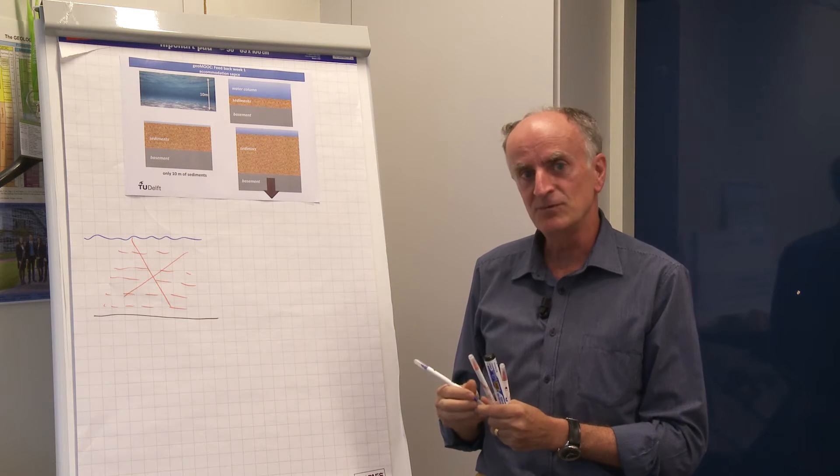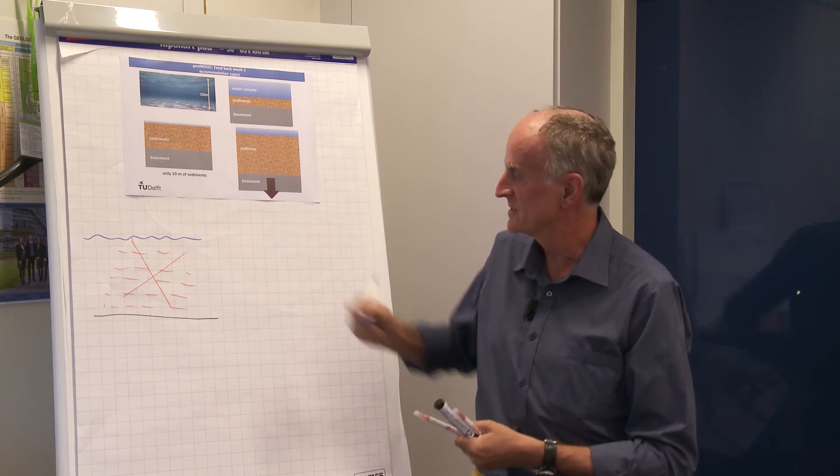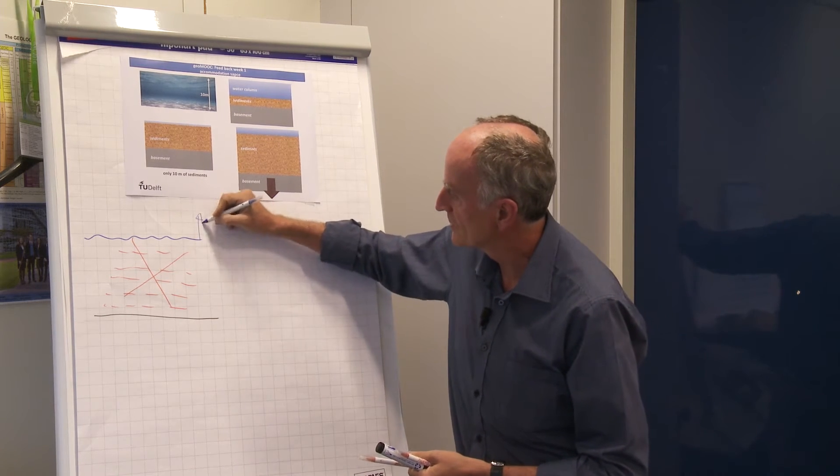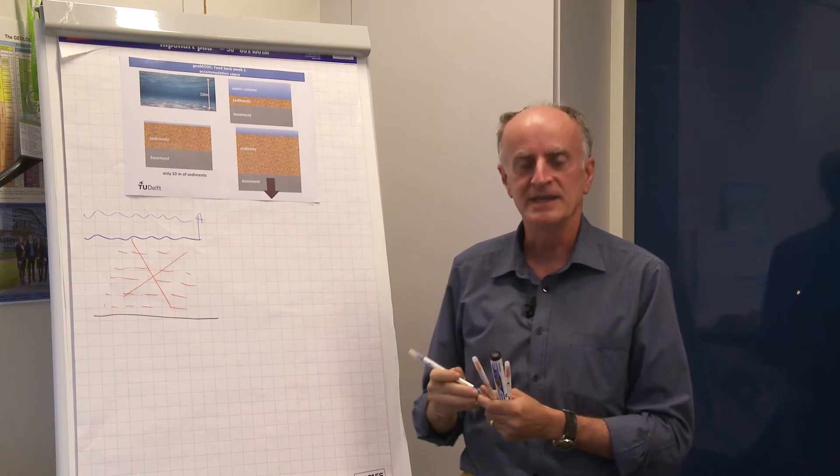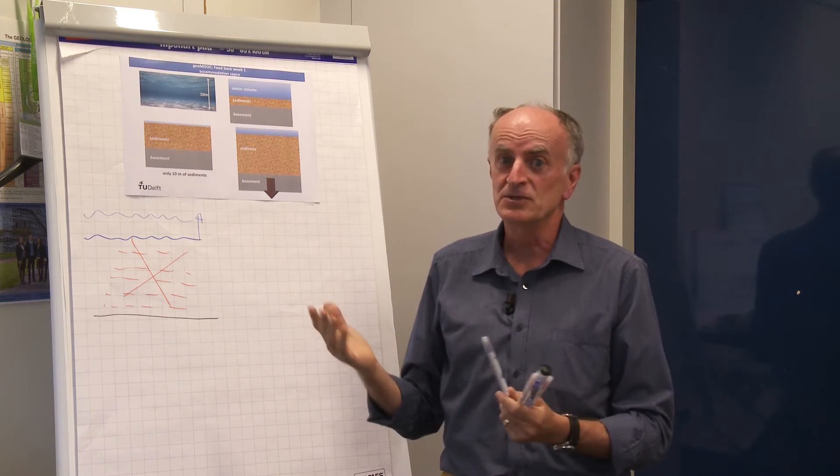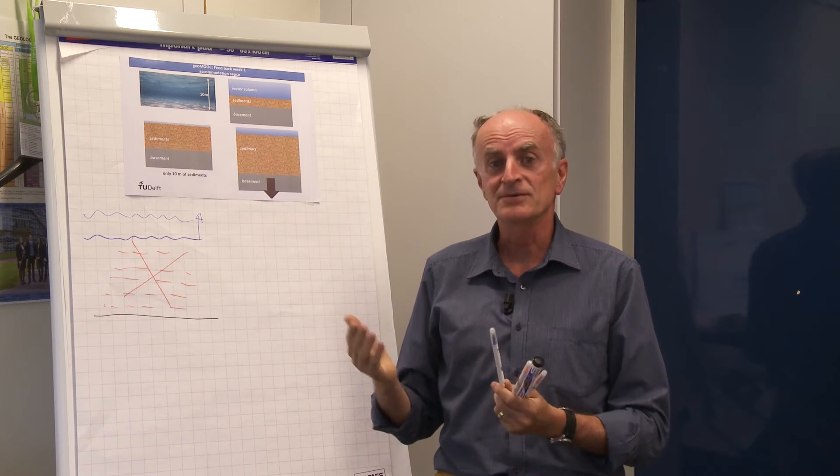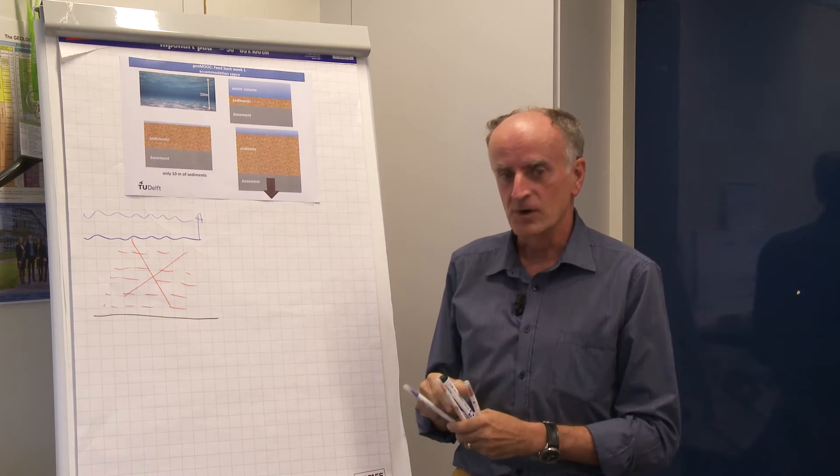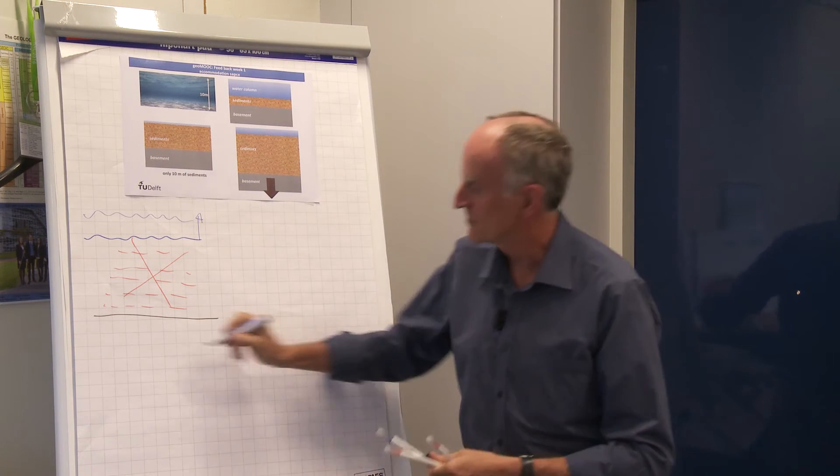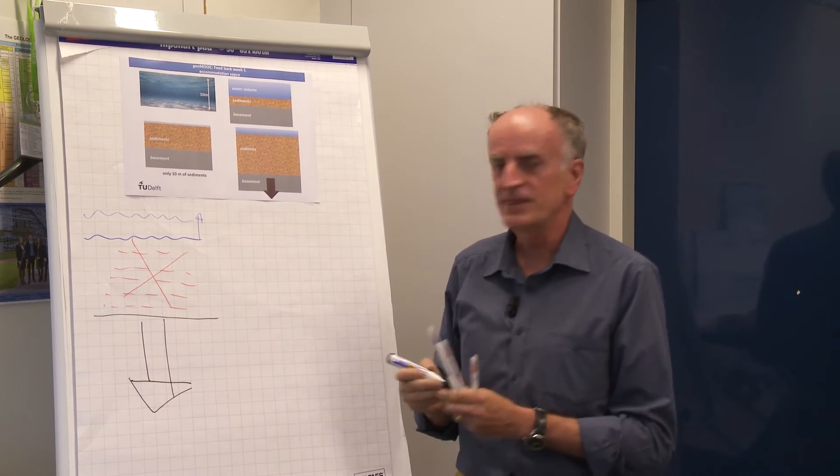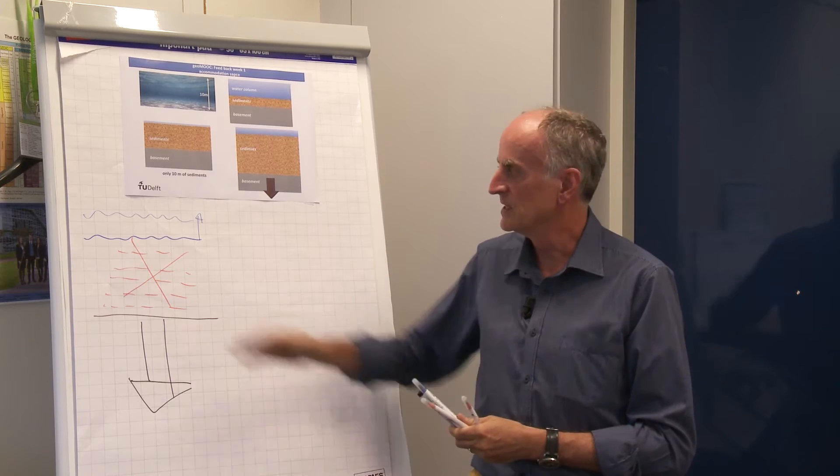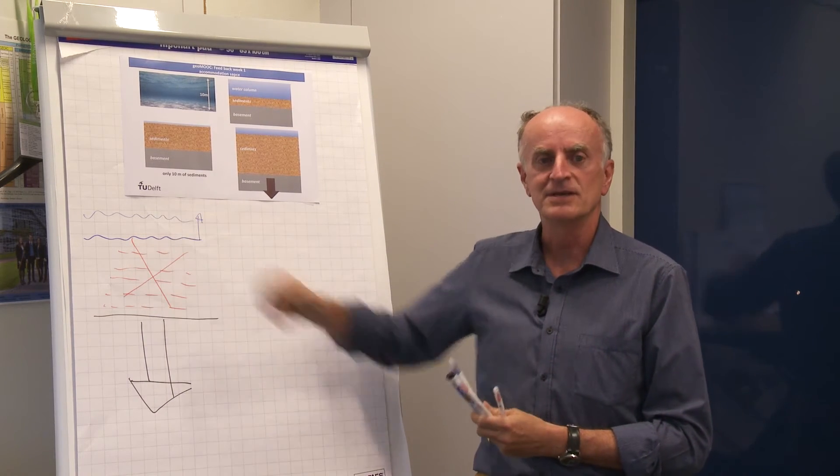We have two ways to increase the accommodation space. One is to raise sea level and this is what happens when we have interglacial times. But this is not very much, maximum 100 or 200 meters. Or, and this is what happens, is to bring down this bottom surface with tectonic process by which we increase by large amounts the accommodation space.